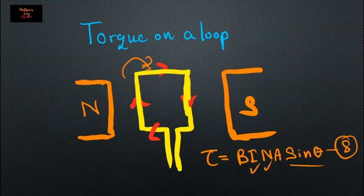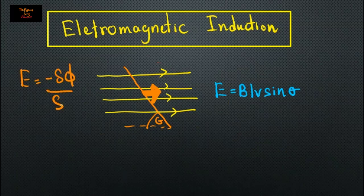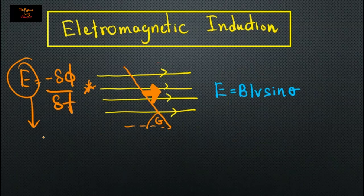Moving into the third part — electromagnetic induction. The base equation is: e equals minus delta-phi over delta-t. This means the induced EMF equals the rate of change in magnetic flux. The other equations in this section are derived from this.